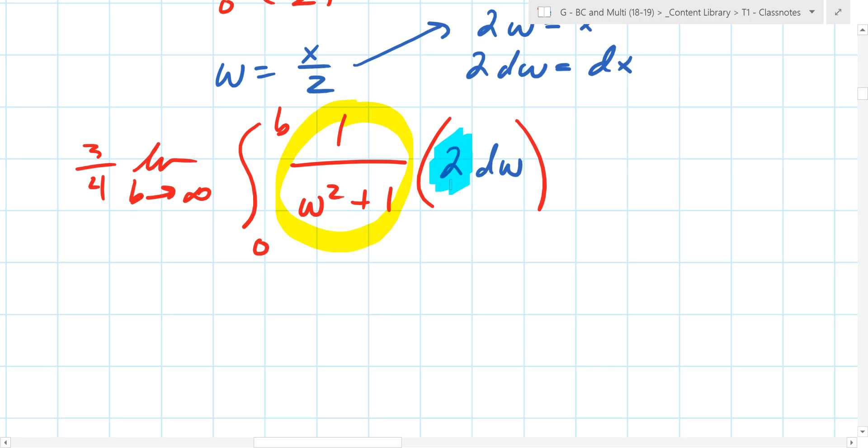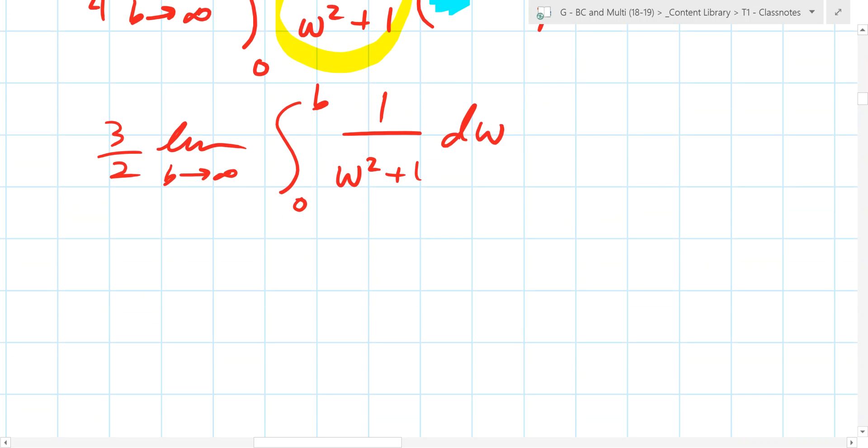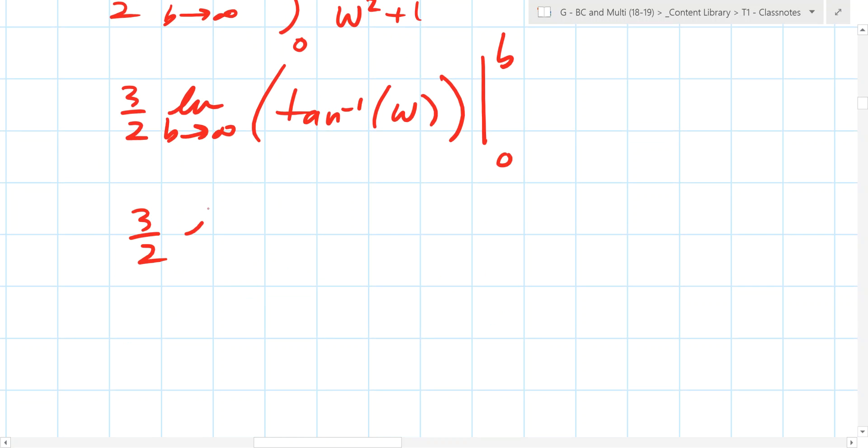What do we know? What is this integral right here? Arctan. So first, what can we do here? Let's just make sure we don't lose things. There's this 2 here, correct? So it's going to be 3 over 2 the limit as B goes to infinity of the integral from 0 to B of 1 over w squared plus 1 dw. Oh, that's nice. So what is that going to be? 3 over 2 the limit as B goes to infinity, and what's the integral? Arctan of w from 0 to B.